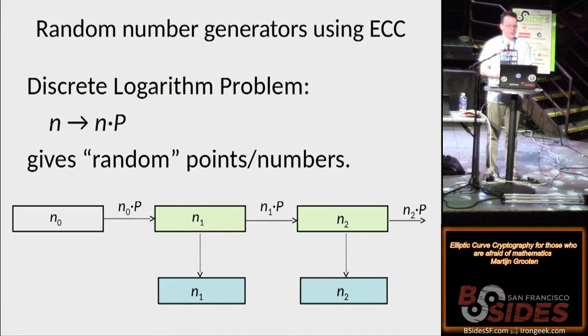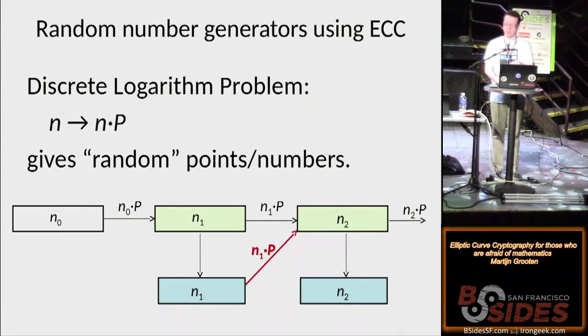A property of random number generator is that they sometimes share the random numbers publicly, which means that an adversary sometimes has access to n1. And that's not a bug, that's a feature. But if they have access to n1, they can compute n2 and n3 because the point P is public. So if they have access to n1, they can crack the whole random number generator, which you don't want because random numbers are supposed to be unpredictable.